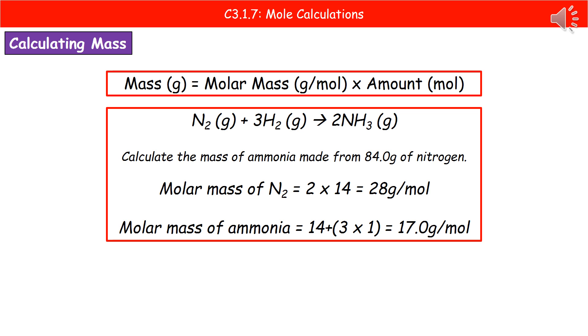If we do the same for our ammonia, that's got the formula of NH3. So nitrogen has the mass of 14 plus 3 times our hydrogen of 1. So that gives us 17 grams per mole.